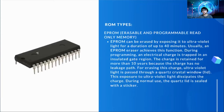We also have EPROM — erasable and programmable read-only memory. EPROM can be erased by exposing it to ultraviolet light for a duration of up to 40 minutes. Usually an EPROM eraser achieves this function. During programming, an electrical charge is trapped in an insulated gate region. The charge is retained for more than 10 years because it has no leakage path. For erasing this charge, ultraviolet light is passed through a quartz crystal window. This exposure to ultraviolet light dissipates the charge. During normal use, the quartz window is sealed with a sticker.